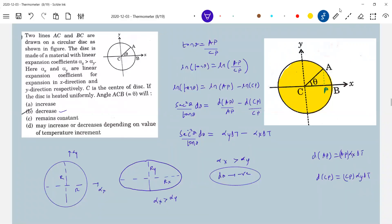If alpha x equal to alpha y, then it will become again disk of increasing radius. Since alpha x not equal to alpha y, so the shape will be like this.